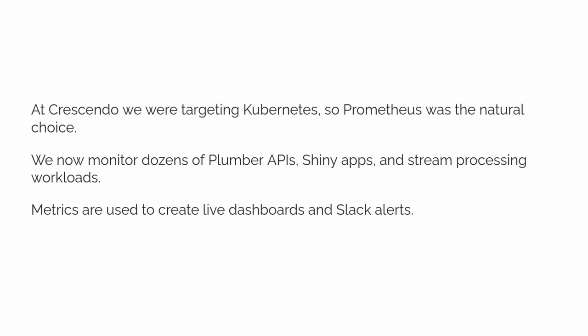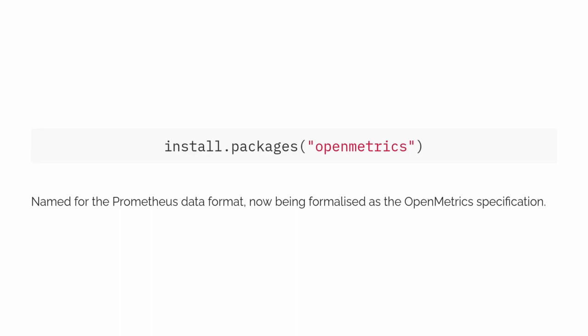Since we started using this about a year ago, we now monitor dozens of Plumber APIs, Shiny applications, and even some stream processing workloads with Prometheus. We use these metrics to create monitoring dashboards and generate alerts when things go wrong. The open source outcome of this work is the OpenMetrics package, already available on CRAN. It's a complete and slightly opinionated client library for Prometheus, named after the Prometheus data format which is currently in the process of becoming the OpenMetrics specification for the Internet Engineering Task Force — the same group that standardizes things like HTTP.